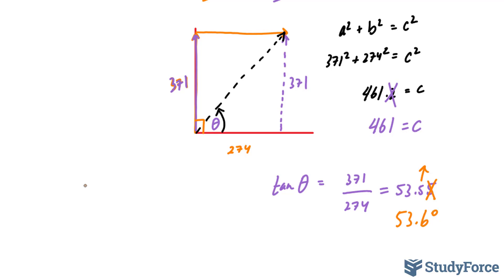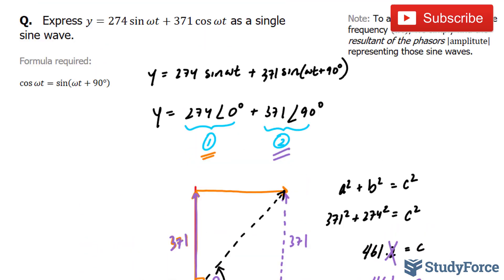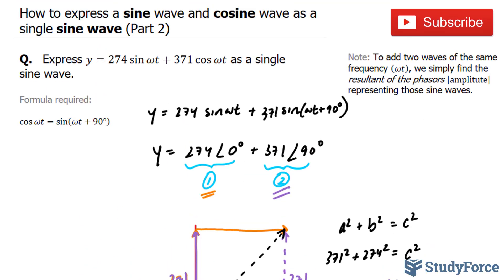Therefore, our final sine wave function will be 461 sine omega t plus 53.6 degrees. This represents your sine function for these two terms combined. And there you have it — that is how to express a sine wave and cosine wave as a single sine wave.